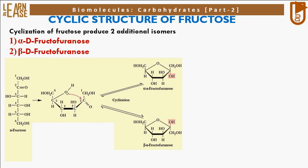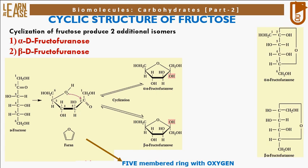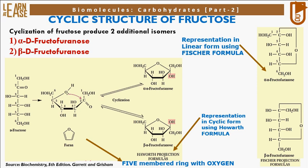Fructofuranose is a 5-membered ring containing oxygen; this 5-membered ring is known as the furan ring, and so the naming of the cyclic structure of fructose — fructofuranose — is derived from the word furan. The image on the right shows the representation of alpha-D-fructofuranose and beta-D-fructofuranose in linear fashion using the Fischer formula, whereas their representation in cyclic fashion is shown using the Haworth formula.